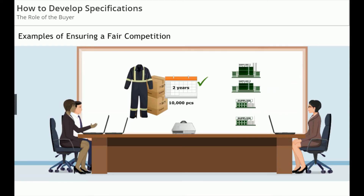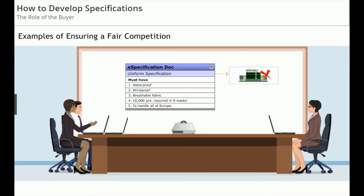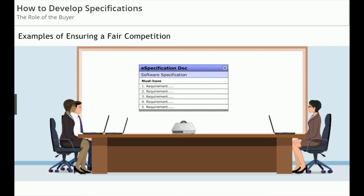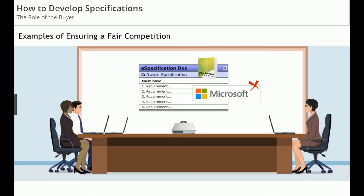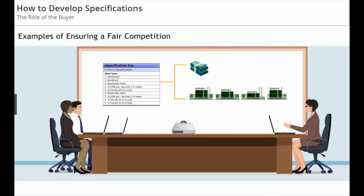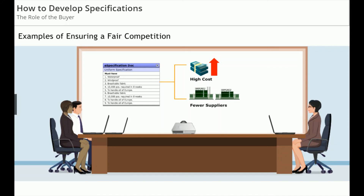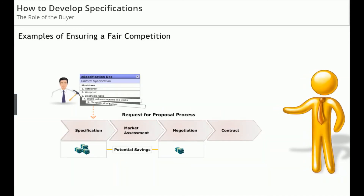Exactly. I'll give you one more example of keeping a fair competition: don't specify a particular brand or supplier. For example, if you're buying word processing software, don't specify Microsoft Word. In general, the more specific your requirements are and the more requirements you add, the higher the cost will be and the fewer suppliers you will have to compete for your business. Daniel sees that his role is to influence the budget holder at the specification stage, because that is where he has 10 times the potential savings compared to the negotiation stage.